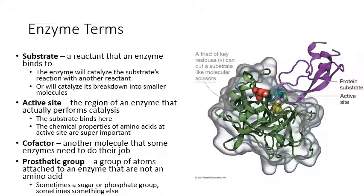Once the enzyme has the substrate attached, it's going to catalyze a chemical reaction between that substrate and another reactant, or maybe break the substrate into pieces for a catabolic reaction. The part of the enzyme where this is occurring is called the active site — where the enzyme binds the substrate and where catalysis occurs. Sometimes you might have a mutation that changes some aspect of the enzyme's structure, and if it's far away from the active site, that might be okay. But any amino acid at the active site is really important, or else the enzyme won't function.